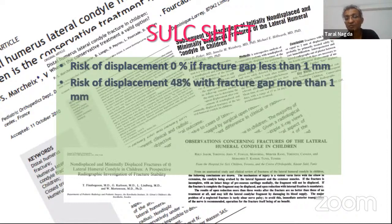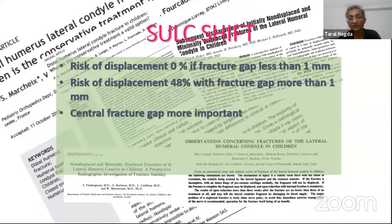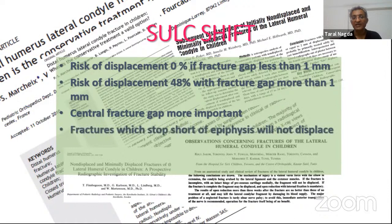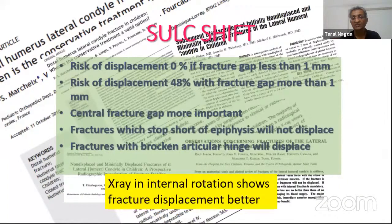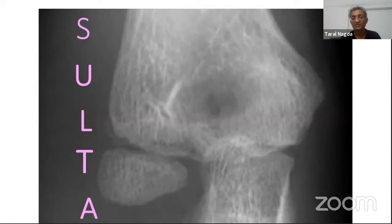If fracture gap is more than two millimeters, almost 50 percent will displace — so those should be pinned after reduction. In Jacob's classification, Jacob 1 covers all fractures less than two millimeters. Central fracture gap is more important: if the central gap equals the lateral gap, they are more likely to displace. If the central gap is narrow and the lateral gap is wider, some of those fractures may not displace.